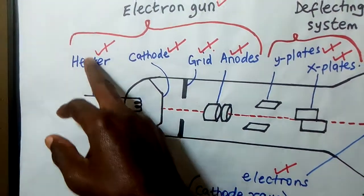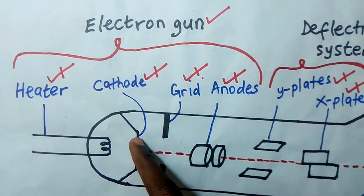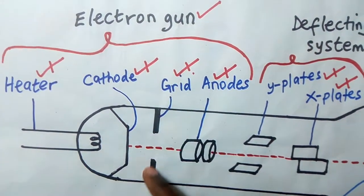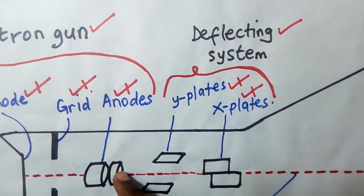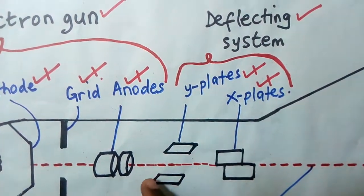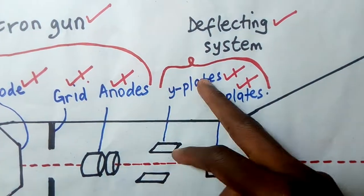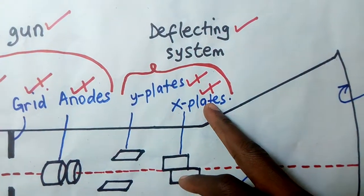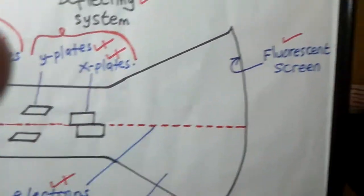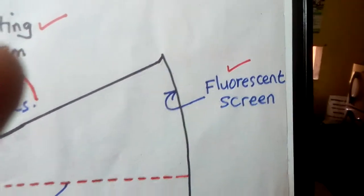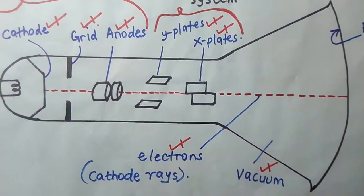Starting from this side, here we have the heater, then next to the heater we have the cathode. After the cathode you have the grid. After the grid you come to the anodes. Then you come to the plates — one is called the Y plates, the ones which look horizontal. Somebody would think these are the X plates because they're horizontal, but no, these are the Y plates. The ones which look vertical are the X plates. Then after that you go to the fluorescent screen. The dotted parts are electrons. These are the major parts of a cathode ray oscilloscope.